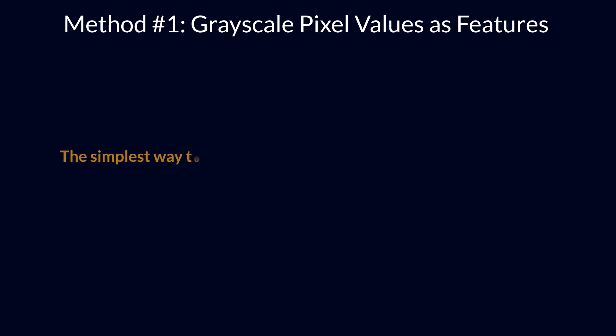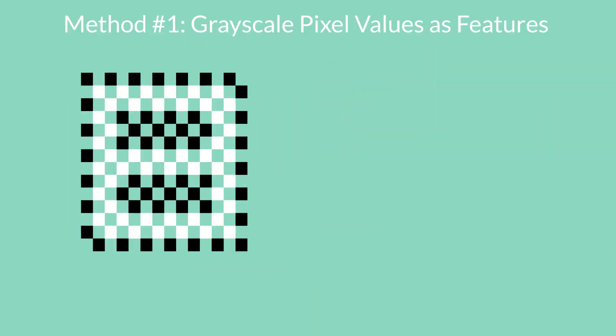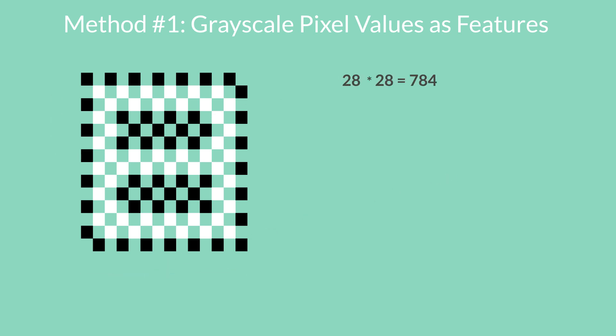The simplest way to create features from an image is to use the raw pixel values as separate features. Consider the same example — our image of the number 8. The dimension of the image is 28x28. Can you guess the number of features for this image? The number of features will be the same as the number of pixels — hence, that number will be 784.